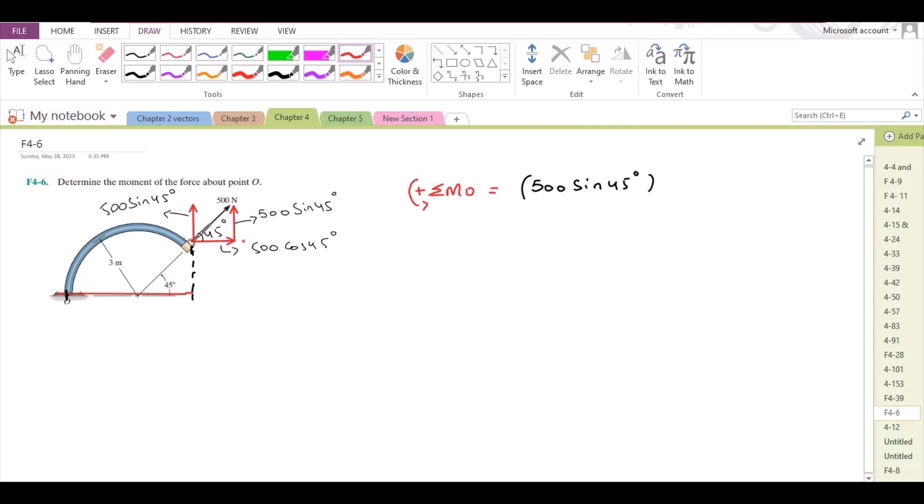From the given figure, we can clearly see that the distance from point O to this point right here is 3 meters because it is equal to the radius of the circular path. Now we have to find the remaining distance.